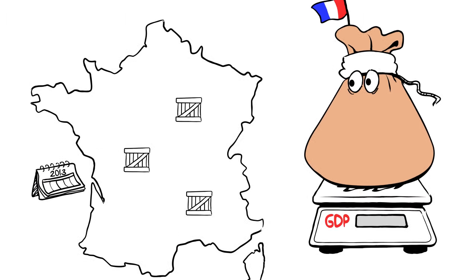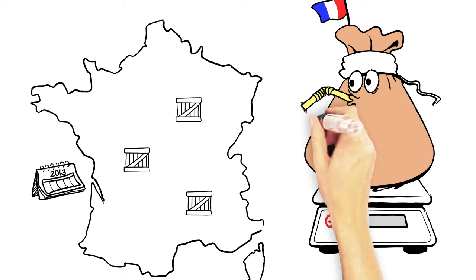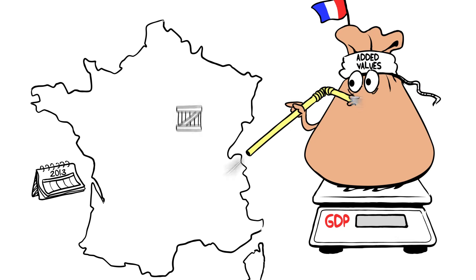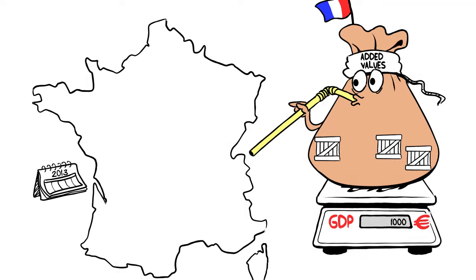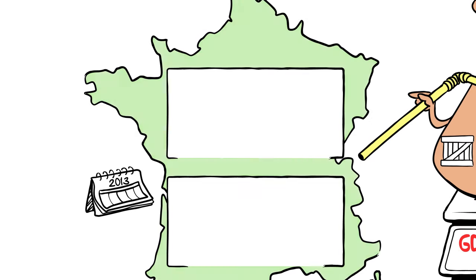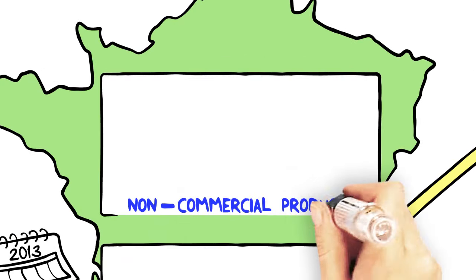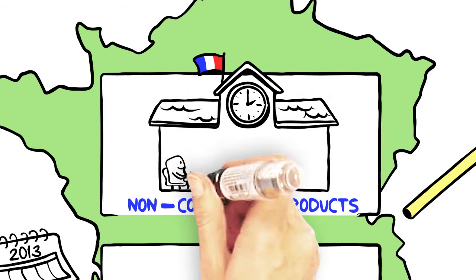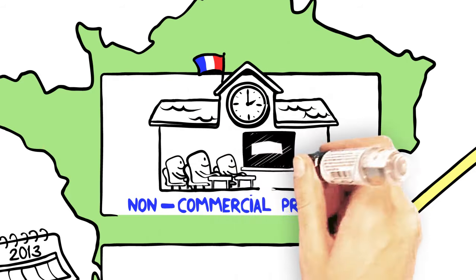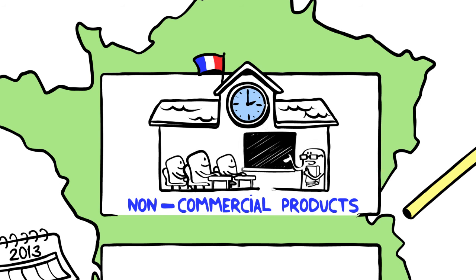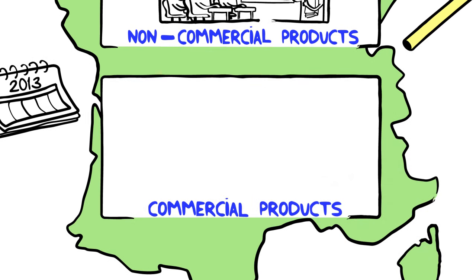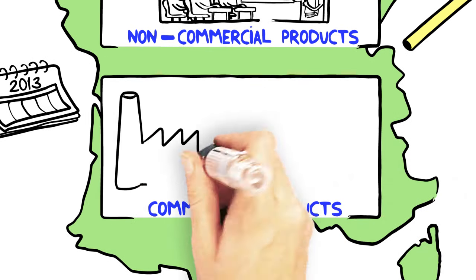To calculate GDP, one option is to add up the values added to everything that is produced in the country. We can identify two types of added value: values added to non-commercial products, meaning those produced by administrations, such as an hour of class given by a teacher, and values added to commercial products, meaning those produced by private enterprises.